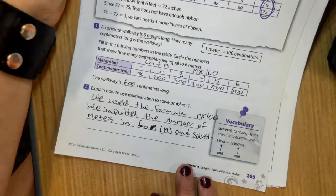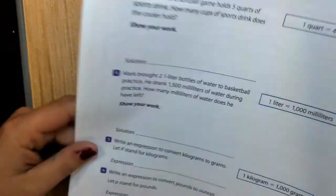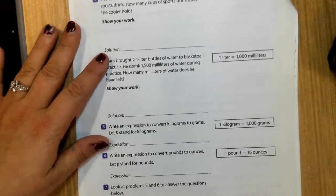When it's asking us to explain how to use multiplication to solve problem 1, well, we used the formula M times 100. We inputted the number of meters in for M and solved. The back of the page, we're on practice book page 270.